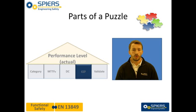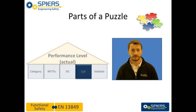Common cause failure occurs where different items fail from a single event, where these failures are not a consequence of each other.